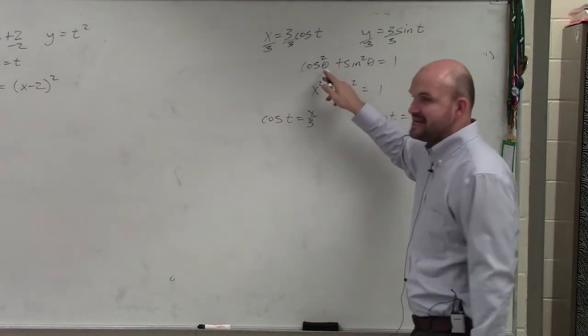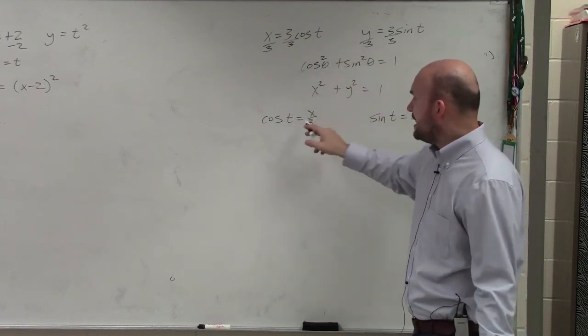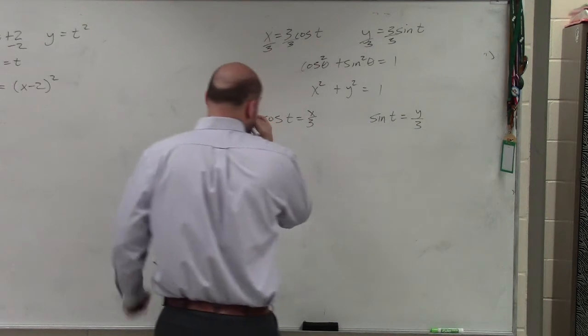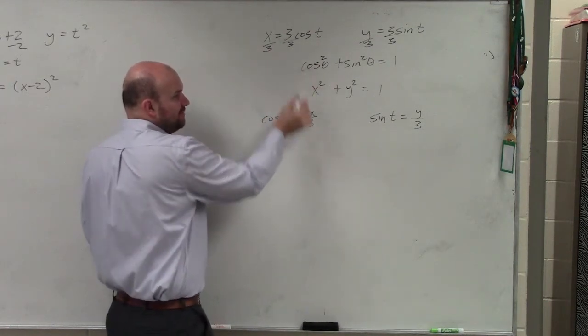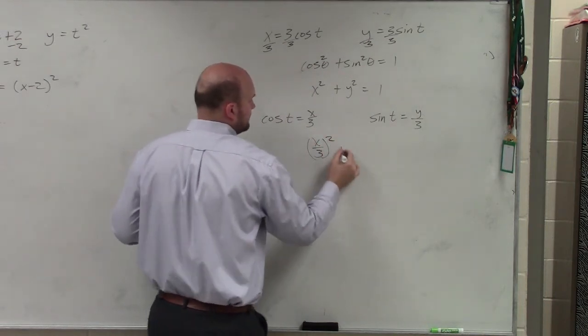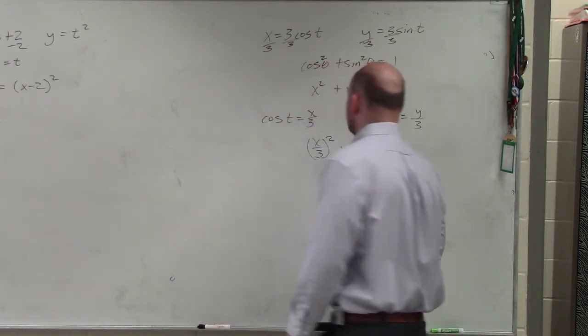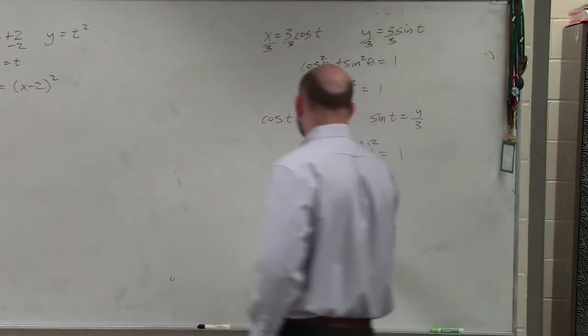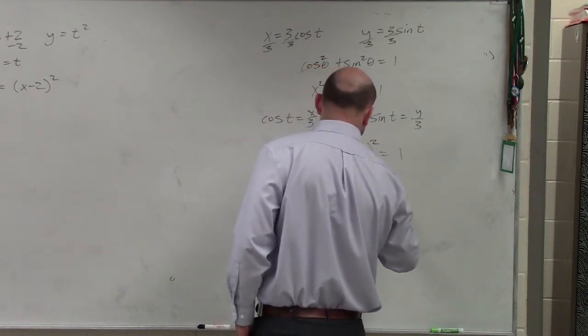So instead of saying theta, using theta, we could use t. So in reality, all I simply am doing is I'm replacing this cosine of t with x over three. And when I do that, I get x squared over nine plus y squared over nine equals one.